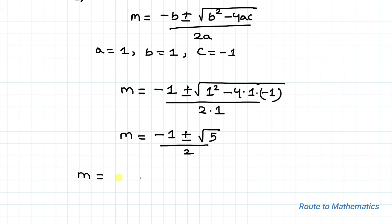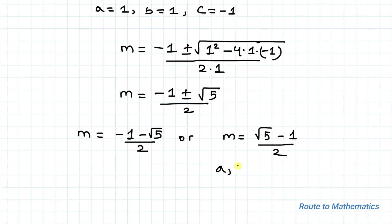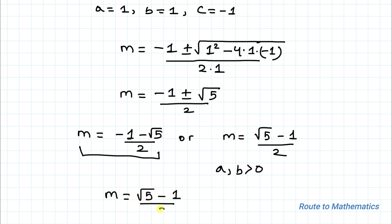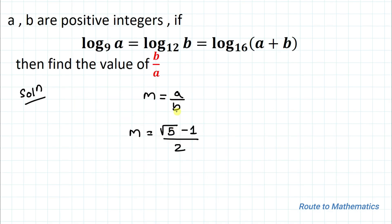From here we can write m equals (−1 − √5) / 2 or m equals (√5 − 1) / 2. Since a and b are given as positive integers, the negative value is discarded. So we have the one valid value: m equals (√5 − 1) / 2.